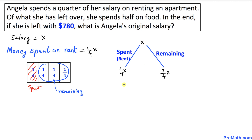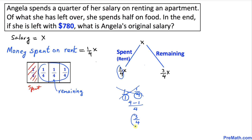Here is an alternative way to find the remaining amount. You always subtract whatever you spend from one: one minus one-fourth. One can be written as one over one. Cross-multiplying: one times four is four, minus one times one is one, divided by one times four is four — so four minus one is three over four. That is the remaining amount.